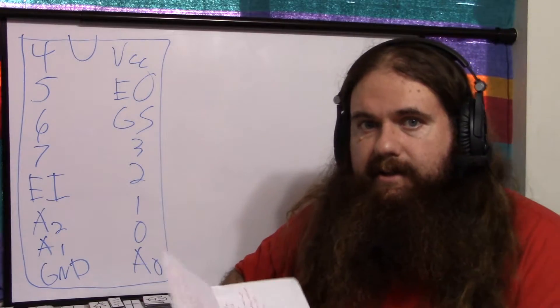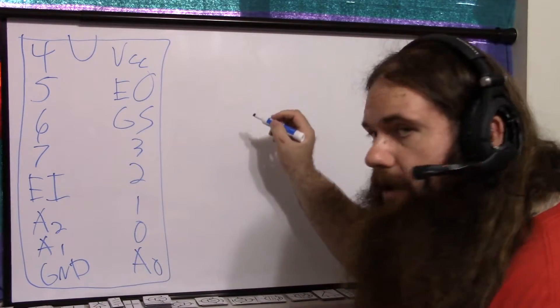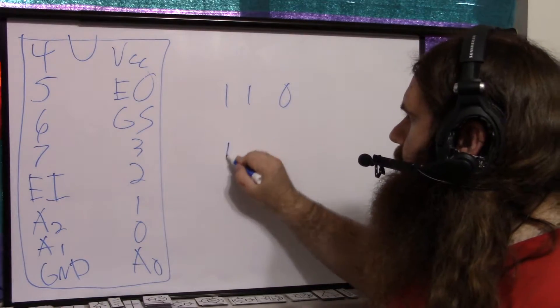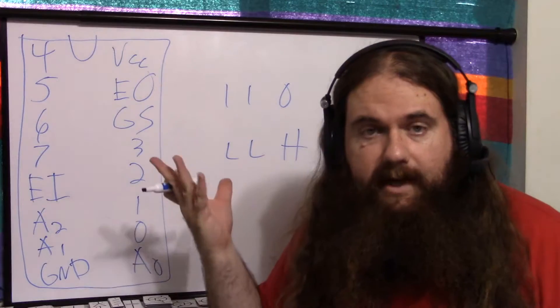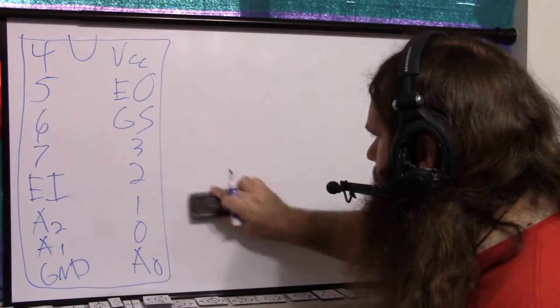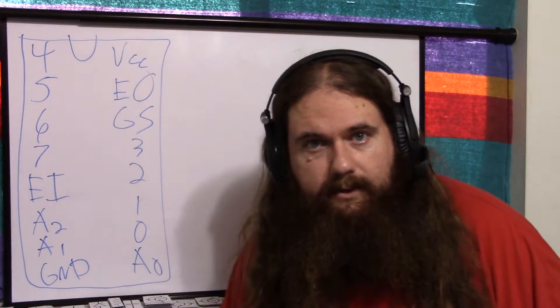Now one thing about this chip is it's active low. So if you have A2 through A0 is 1, 1, 0, that's actually going to be low, low, high. It's active low. So there you go. That's just how they made this chip. There may be an alternative. I don't know. I just bought whatever looked good on Mouser.